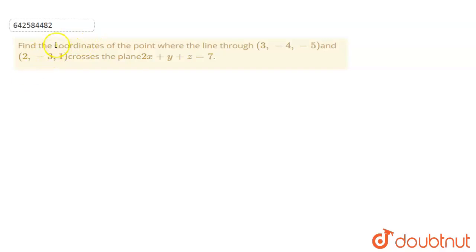Welcome to Doubtnet. So, this is the question. Find the coordinates of the point where the line through (3, -4, -5) and (2, -3, 1) crosses the plane 2x + y + z = 7.